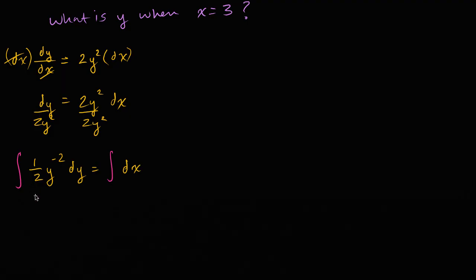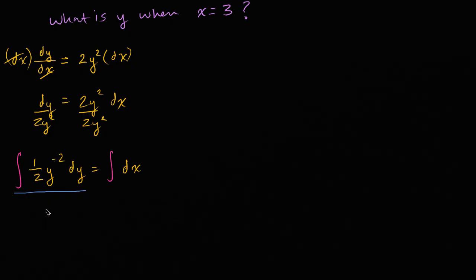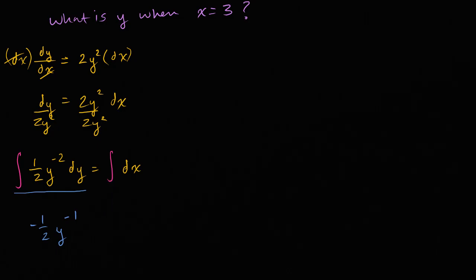What is the left-hand side going to be? We increment the exponent and then divide by that value. y to the negative two, if you increment it, is y to the negative one, and then divide by negative one. So this is going to be negative one-half y to the negative one power. We could do a plus c, but we're going to have a plus c on both sides with different arbitrary constants, so I'm just going to write the constant only on one side. Integrating dx just gives me x, so the right-hand side is x plus c.